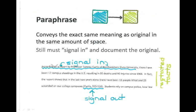A paraphrase is taking the information that you find in the original and recasting it in your own words in more or less the same amount of space as the original. Remember that you still have to signal in and signal out. Notice that this student told where it came from and provided some sort of parenthetical citation. The student's not perfect, but he does the job that will get him to pass.